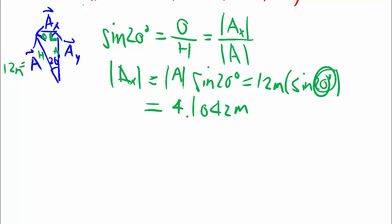Okay, so now we have the size of A, but seeing how Ax goes to the left, we've defined that to be negative, so the actual Ax as a vector is negative 4.1042 meters with the direction put in.